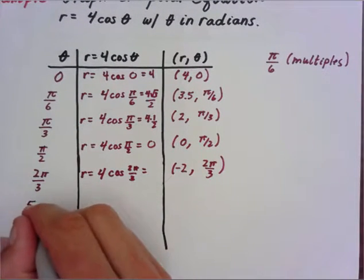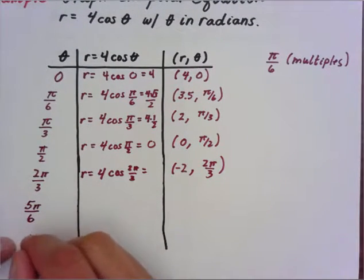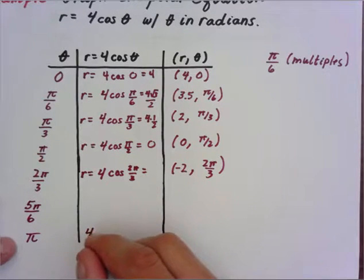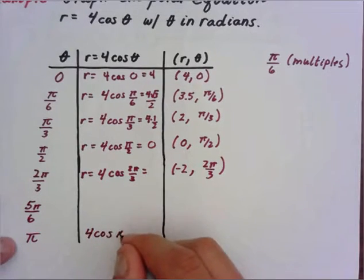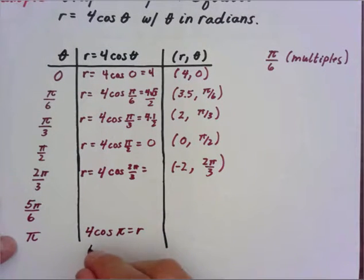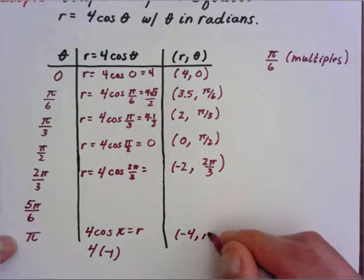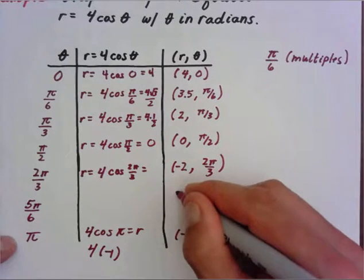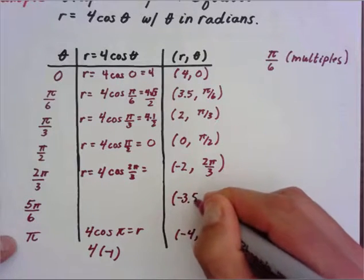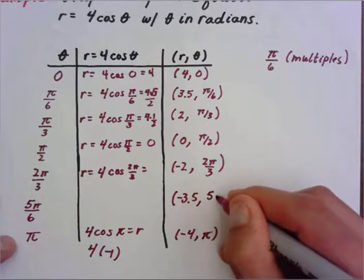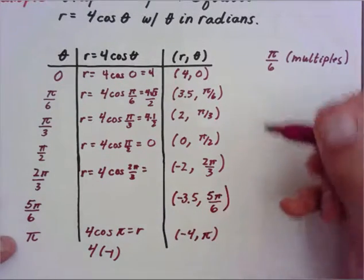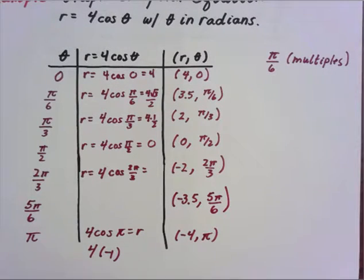We'll do five pi over six, and then the last one is pi. Four times cosine of pi equals r, so that's four times negative one, giving negative four. So the point is (−4, π). I'll fill in the answer for five pi over six: that one is (−3.5, 5π/6). Those are all our points, and now we get to plot each of them.